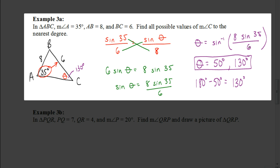Hopefully you understand now how to use the law of sines and apply it to different situations. Remember that when it's angle-side-angle or angle-angle-side, there's always going to be just one solution — you don't have to check for a second one. But when we're dealing with a side-side-angle situation and trying to find the measure of an angle, that's when you use the supplements theorem to check if there's a second angle measurement that would work. Good luck as you work on your assignment.